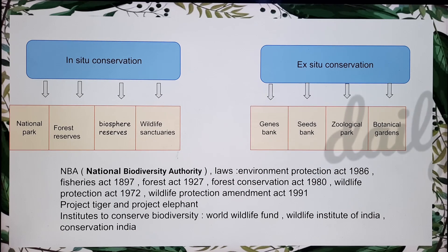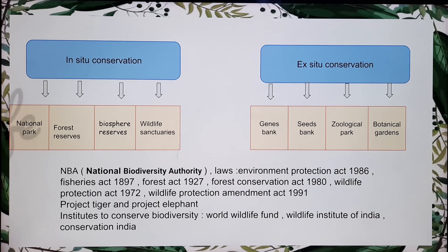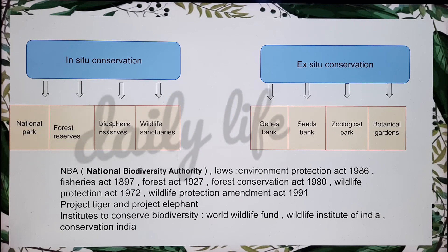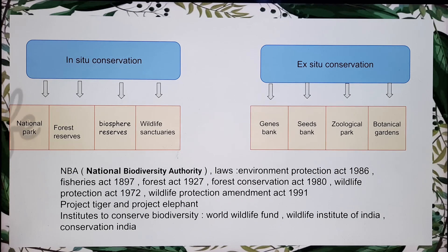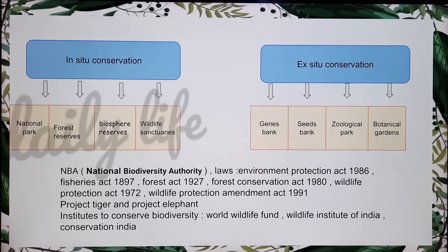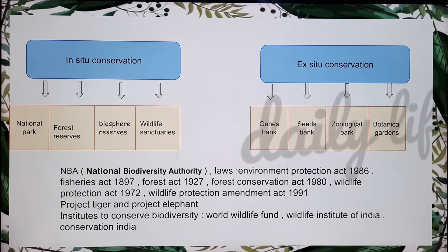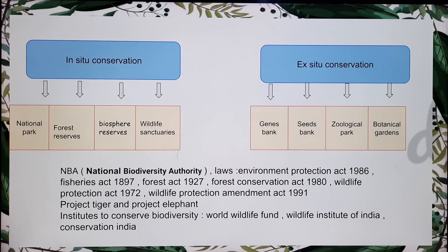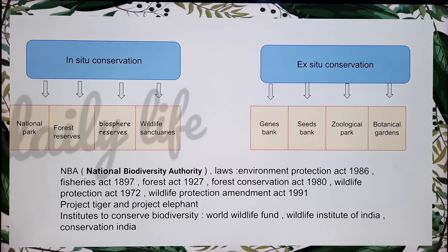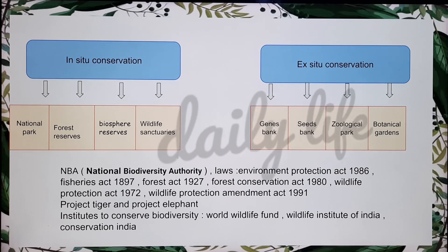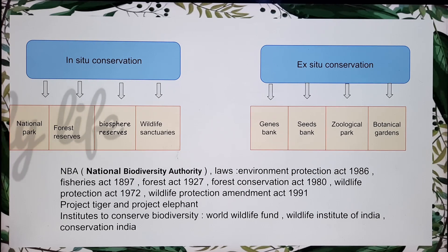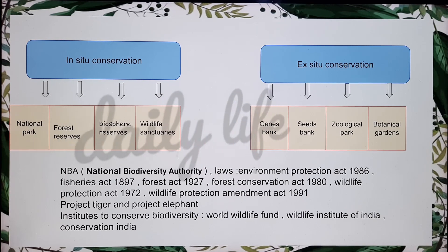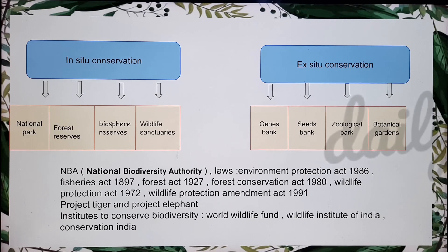Then comes a botanical garden, where humans and plants meet. In these places, a variety of plants are collected, cultivated and conserved for scientific, educational, research and recreational purposes. Plants are labeled and arranged in their various habitats, and they are bred experimentally. This completes in-situ conservation and ex-situ conservation at the national level.